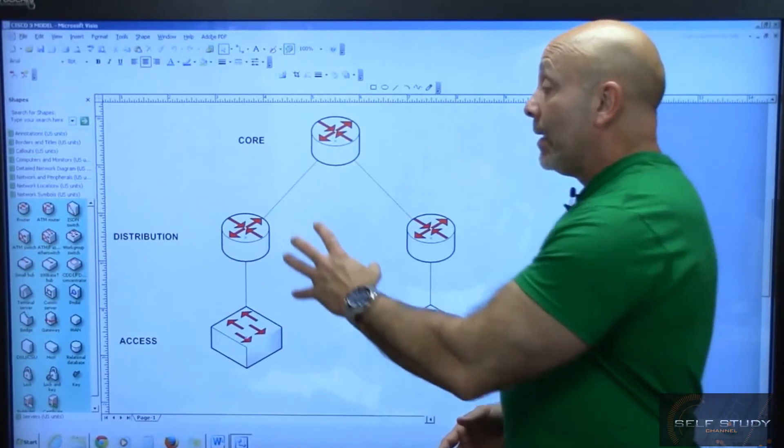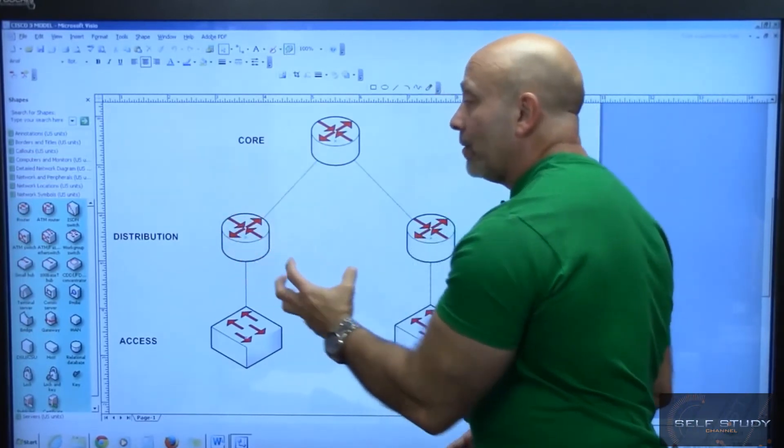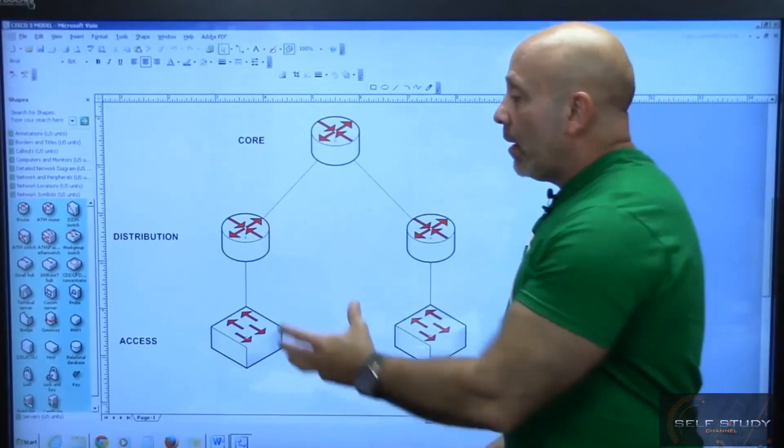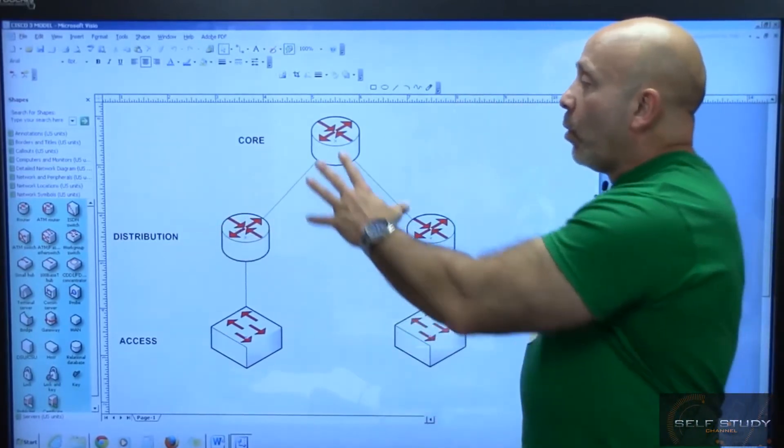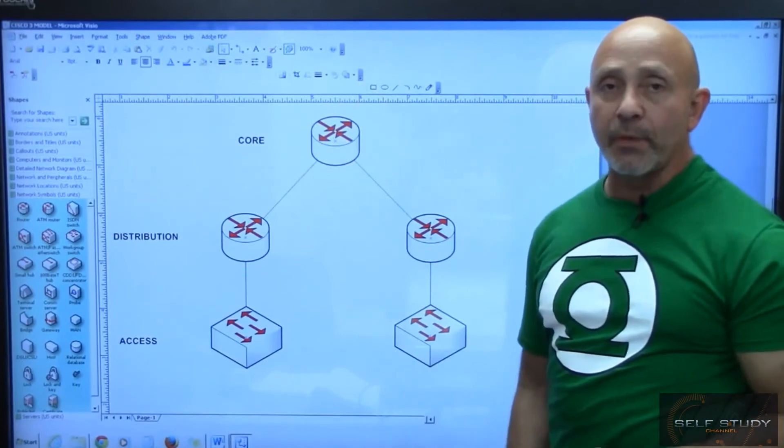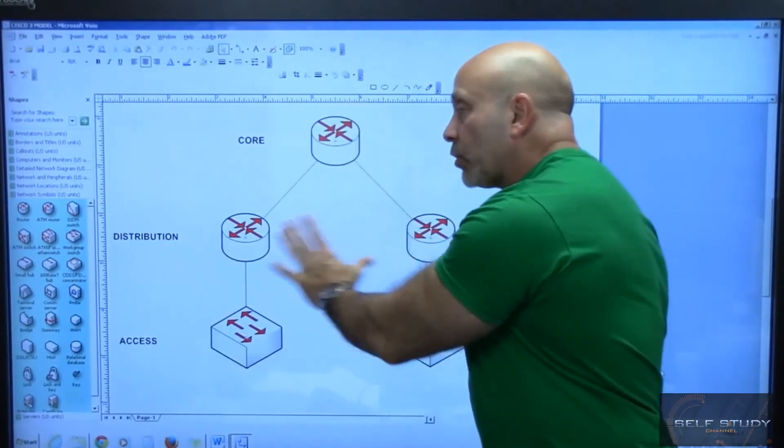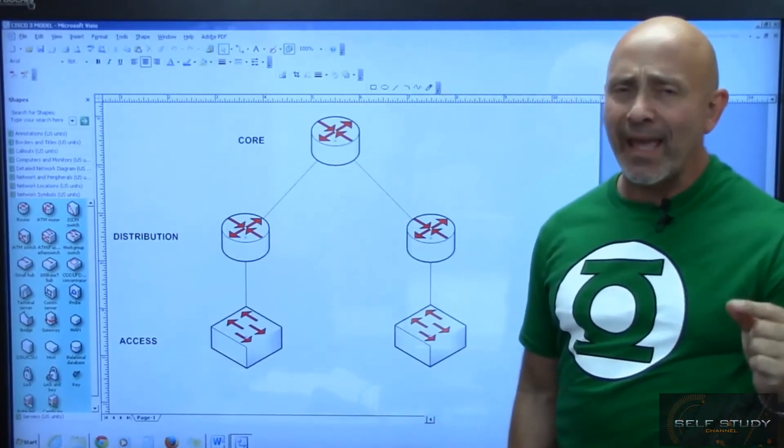But understand that the chunk, the main meat and potatoes as I like to call it, is going on right here. Because we don't want to bog down that core router. We want just information to pass back and forth, and it's the distribution layer that makes that decision: Am I going to send this packet to the core router?